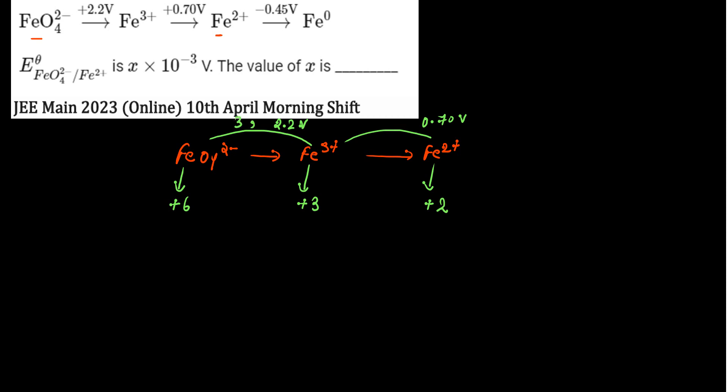Now we have to find E⁰ from FeO₄²⁻ to Fe²⁺, this value.